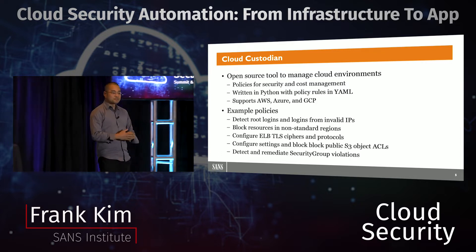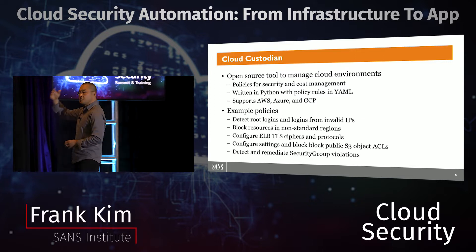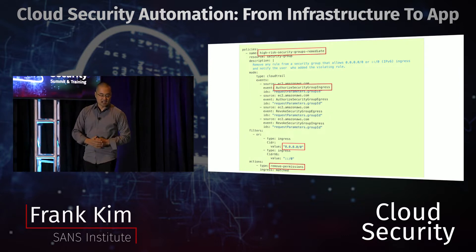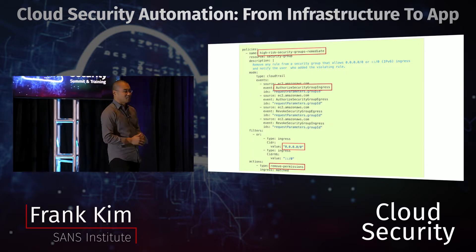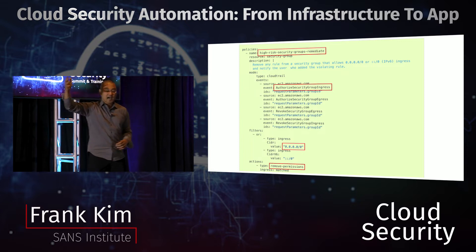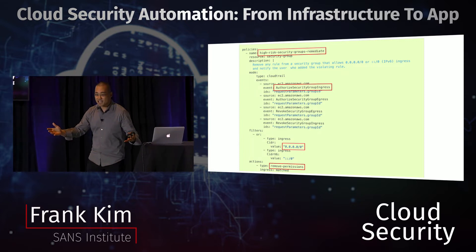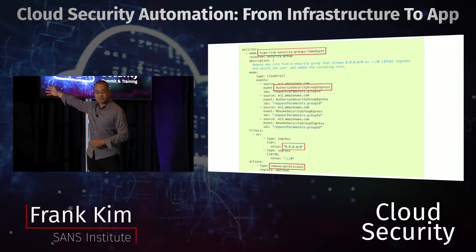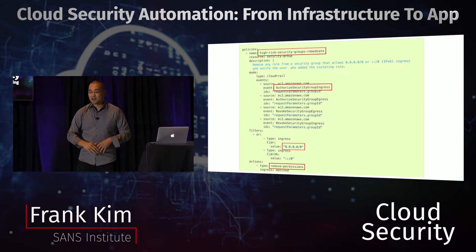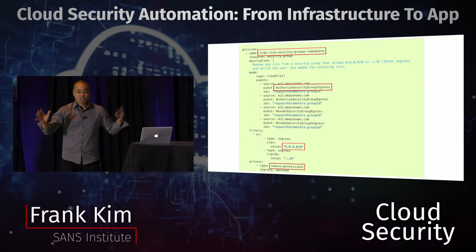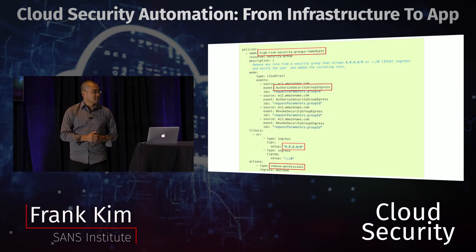The one we're going to dive into today is detecting and remediating security group violations. This is a basic example, but it's very easy for somebody with console or API access to accidentally enable world access 0.0.0.0 to some of your resources by misconfiguring security groups. Cloud Custodian is written in Python. Here's an example of a Cloud Custodian policy document. The name is 'high risk security groups' — we want to not only identify them but remediate automatically. The second highlighted box is looking for authorized security group ingress, and if it detects 0.0.0.0, it removes that permission.